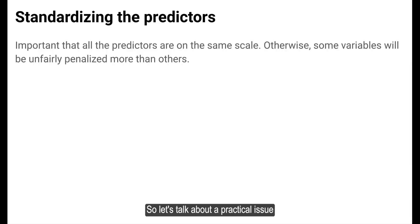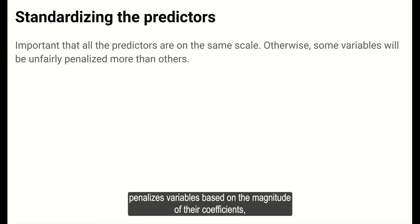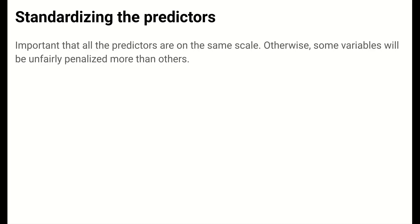So let's talk about a practical issue regarding the scaling of the variables that arises due to the penalty term. Given that the lambda tuning parameter penalizes variables based on the magnitude of their coefficients, it's important that all predictors be on the same scale. Otherwise, some variables will be unfairly penalized more than others.